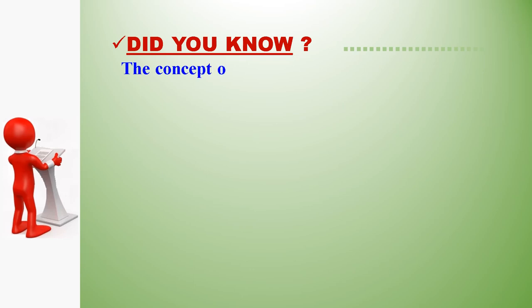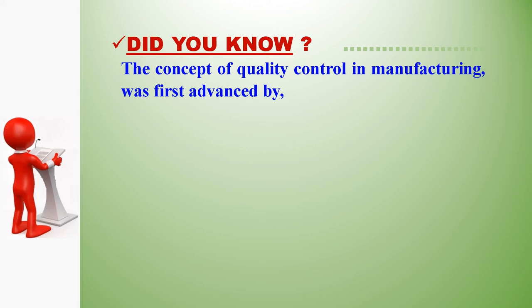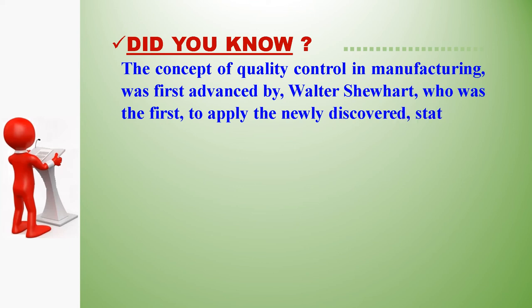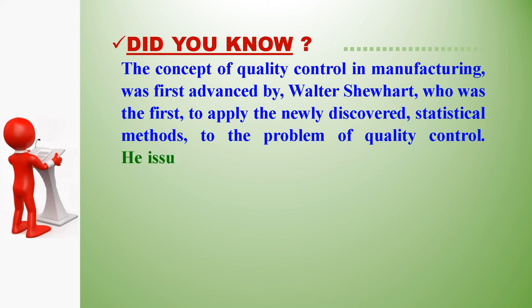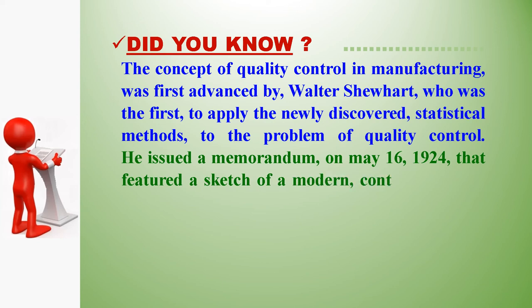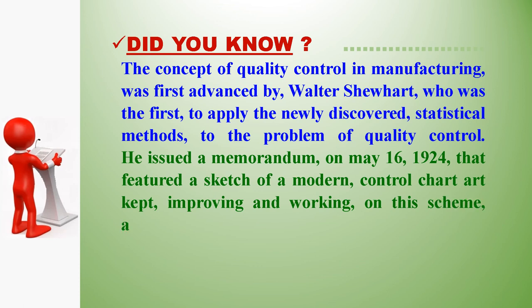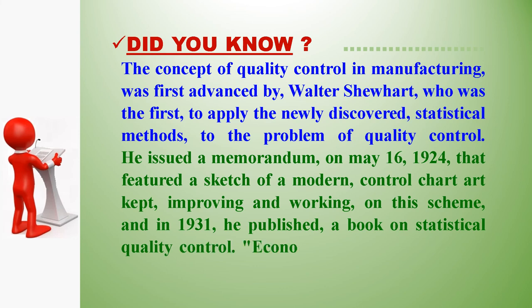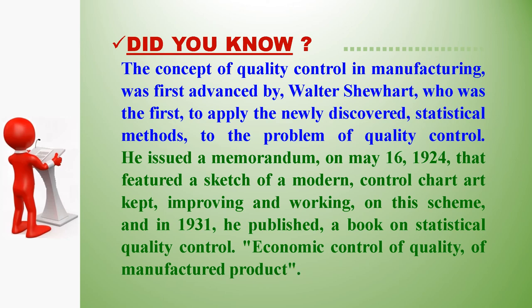Did you know? The concept of quality control in manufacturing was first advanced by Walter Shewhart, who was the first to apply statistical methods to the problem of quality control. He issued a memorandum on May 16th, 1924, that featured a sketch of a modern control chart. He continued improving this scheme, and in 1931 published the book 'Economic Control of Quality of Manufactured Product.'